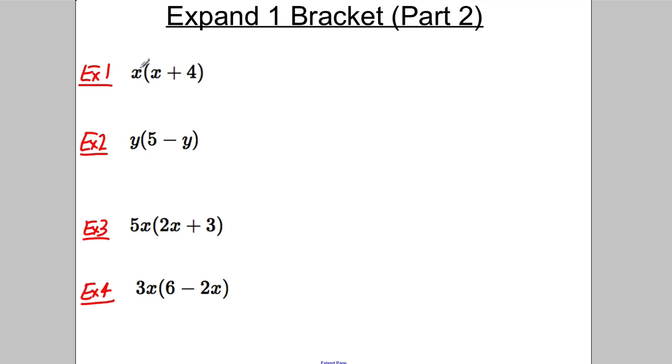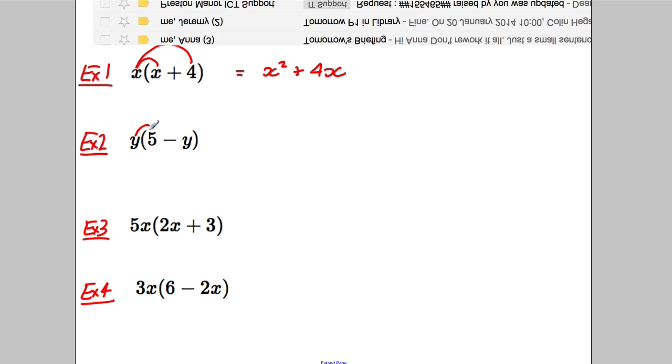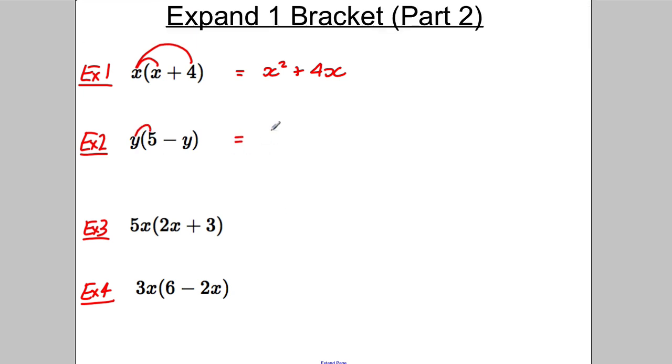So, here we go. Let's have a go at this one. We multiply this out. X multiplied by X, we write as X squared. X multiplied by positive 4 is positive 4X. Next one. Y multiplied by 5 is going to be 5Y. And Y multiplied by negative Y is negative Y squared.